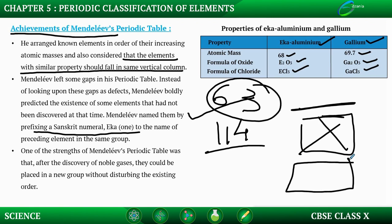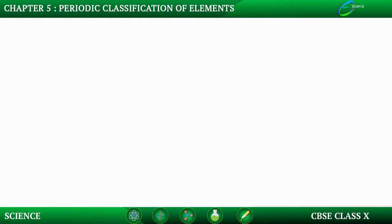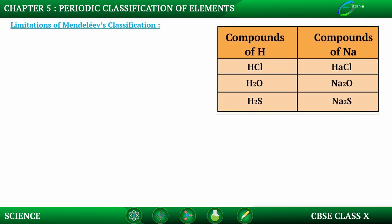Along with advantages, there were also drawbacks — the limitations of Mendeleev's periodic table. The first major limitation was that no fixed position was given to hydrogen in the periodic table. Being the first element, hydrogen's placement remained unresolved and was one of the major limitations.